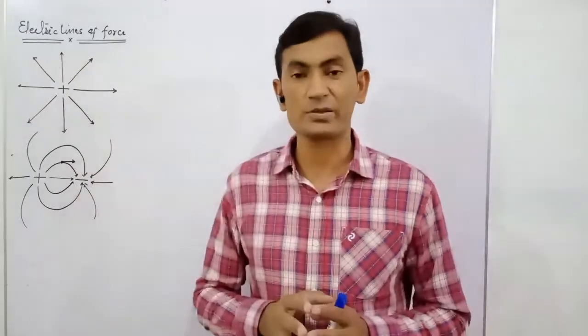Electric flux is the flow of electric lines of force through a certain area perpendicularly. You should differentiate between surface area and vector area. Vector area has a direction perpendicular to the surface. Surface area is just a scalar area, whereas vector area has direction.